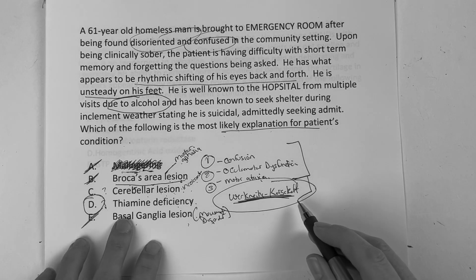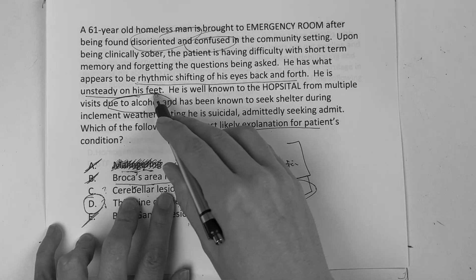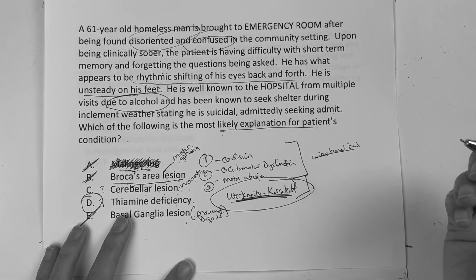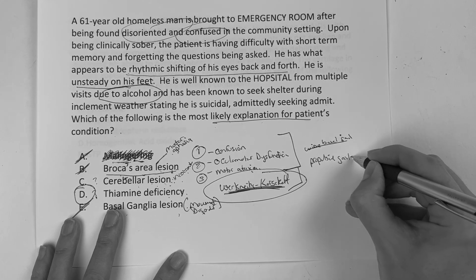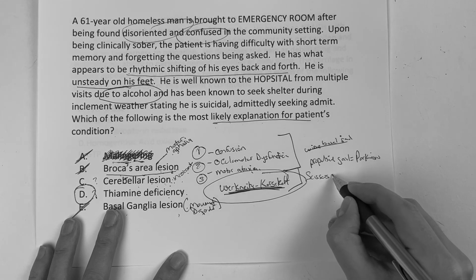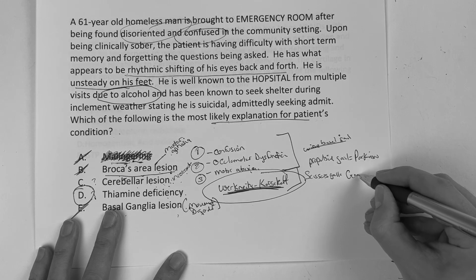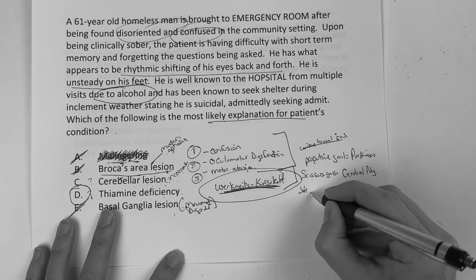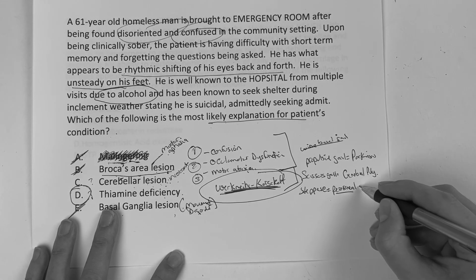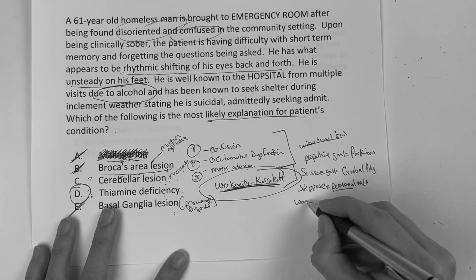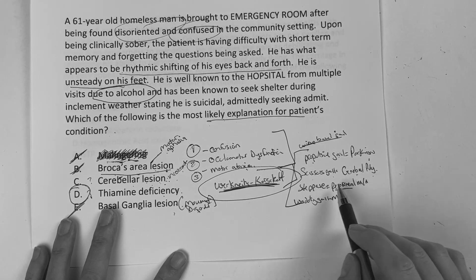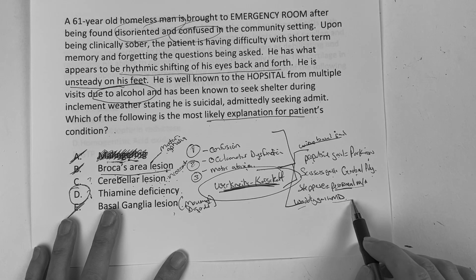Going back to the cerebellar lesion: unsteady on his feet with a cerebellar lesion is usually a wide-based gait. Just a couple of gait patterns to know: propulsive gait — think Parkinson's, head and neck bent forward. Scissors gait — thighs and knees rub together — think cerebral palsy. Steppage gait — that's going to be more of a peroneal muscle or nerve injury. Waddling gait — think muscular dystrophy. So: propulsive gait = Parkinson's, scissors gait = cerebral palsy, steppage gait = peroneal nerve, waddling gait = muscular dystrophy, wide-based gait = cerebellar.